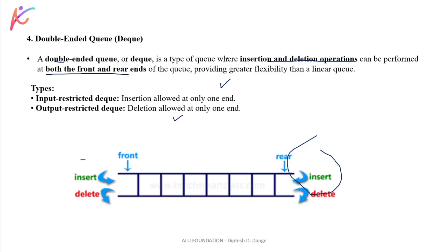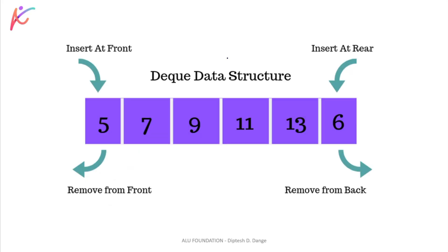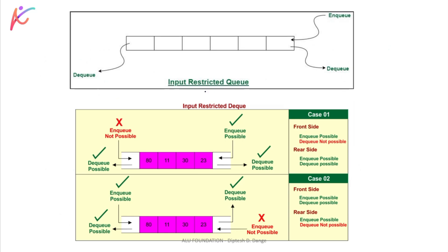अगर आप input restricted DEQ देखें, तो insertion बस एक end से allowed है — rear end से NQ करते हैं जब insert करना है, और front से भी delete कर सकते हो और rear से भी delete कर सकते हो। Input restricted DEQ के two cases हैं: Case 1 — insertion is allowed at only one end, and that end is the rear end। Case 2 — insertion is allowed at only one end, and that end is the front end।